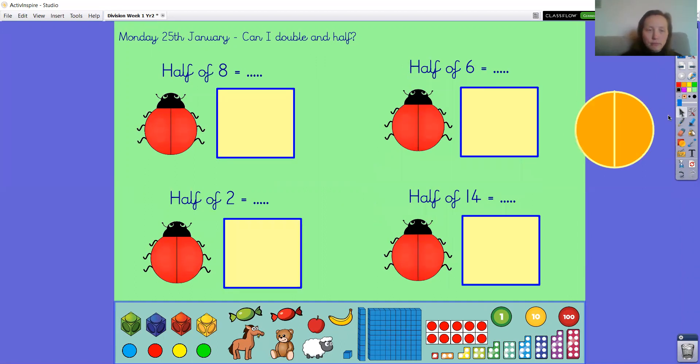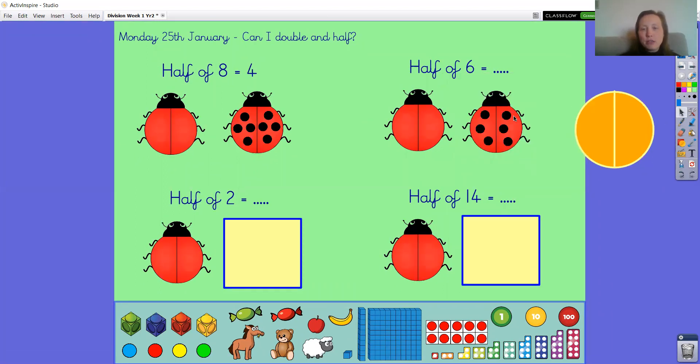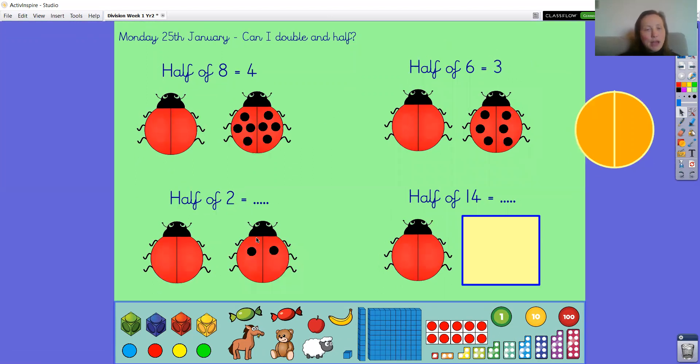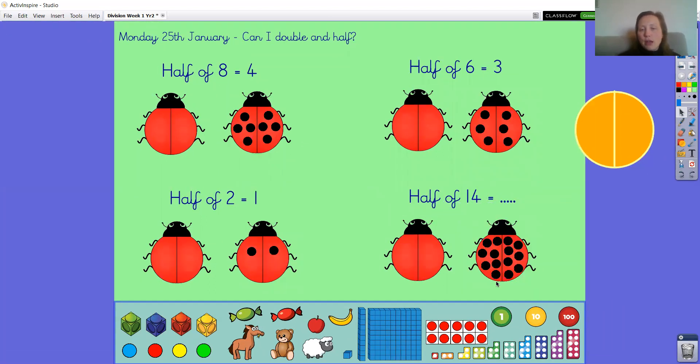Brilliant! I've put my eight spots on my ladybird equally, and I can see that on half of the ladybird we have got four spots, so half of eight is four. Half of six: my ladybird has six spots, and on half of her there are three, so half of six is three. Half of two: she's got two spots, but on half of her there is one, so half of two is one. And finally, half of fourteen: she's got fourteen spots altogether. Half of fourteen is seven.